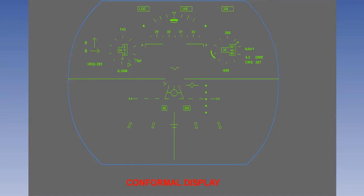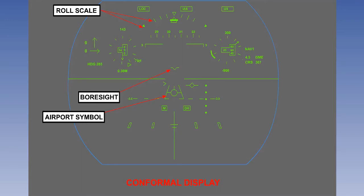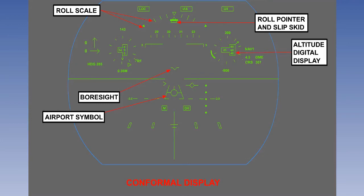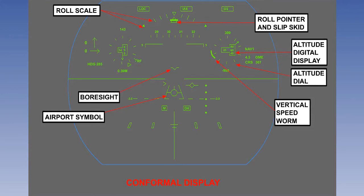We'll start with a conformal display. Here is the airport symbol. And here is the bore sight. This is the roll scale which shows angle of bank. And these are the roll pointer and slip or skid indicators. There is an altitude display and an altitude dial. An analogue worm display gives us vertical speed information.